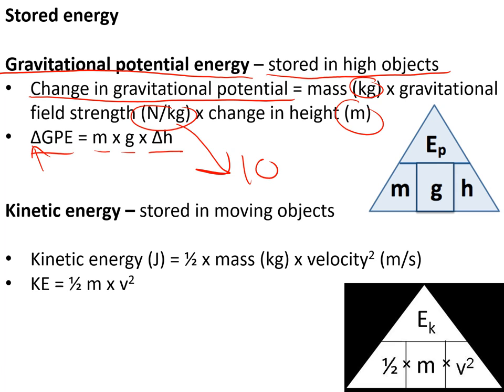Kinetic energy is energy stored in moving objects. Kinetic energy equals half times the mass times the velocity squared — mass must be in kilograms, velocity must be in metres per second — so KE = ½mv².